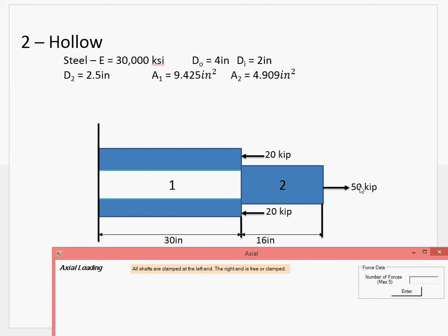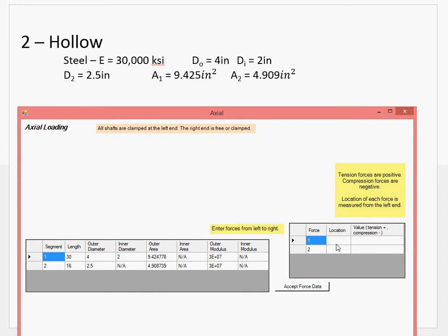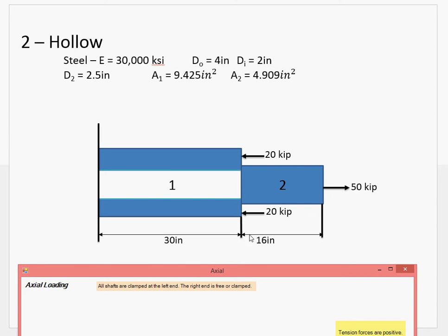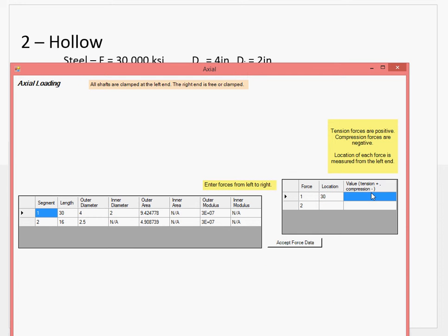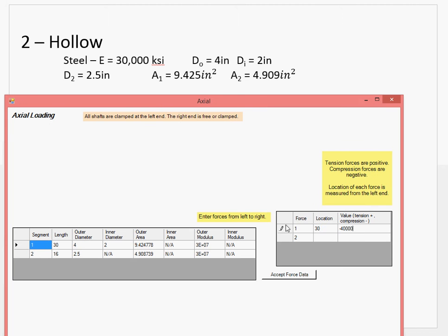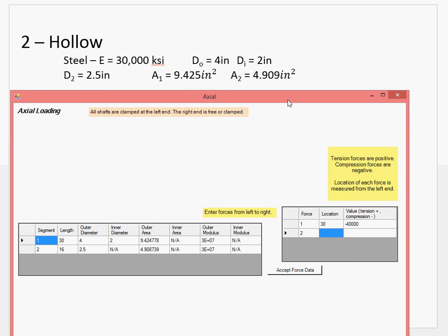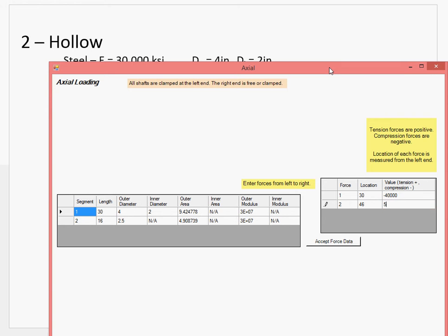So now I can put in loads. We have this right load. And here we have a 40 kip load. Working from the left to the right, at the end of segment 1, so 30 inches, we have negative 40 kip, negative because compression. Segment 2 is 16 inches. So 30 plus 16, 46. And it is 50. Left clamp only.